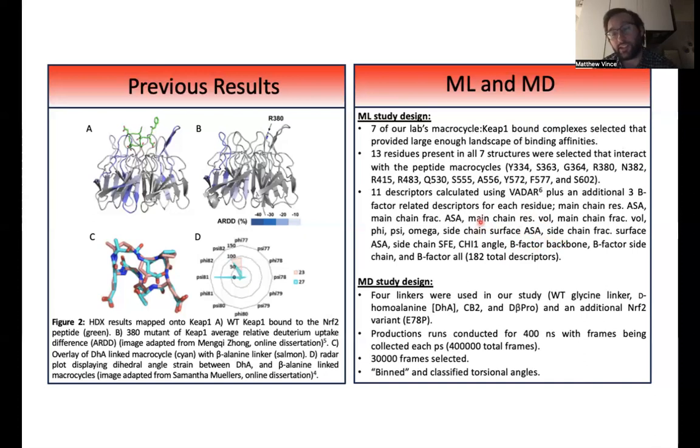For the molecular dynamics study design, I'm using four linkers that are listed here, as well as an additional NRF2 variant, this E78P variant.